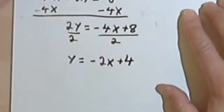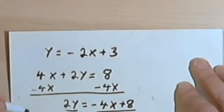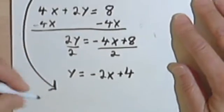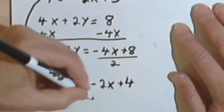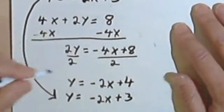And before I go to graph that, I'm just going to take this other equation and copy it down with the second one. So I just bring it down here. I'm going to get y equals negative 2x plus 3.